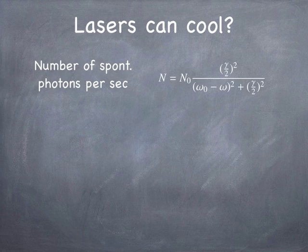And, just to give you rough numbers, omega-0 tends to be on the order of 10 to the 15 cycles a second. Gamma is more like 10 to the 9, or many times 10 to the 8 cycles a second. And, so, omega-0 is much, much larger than gamma.